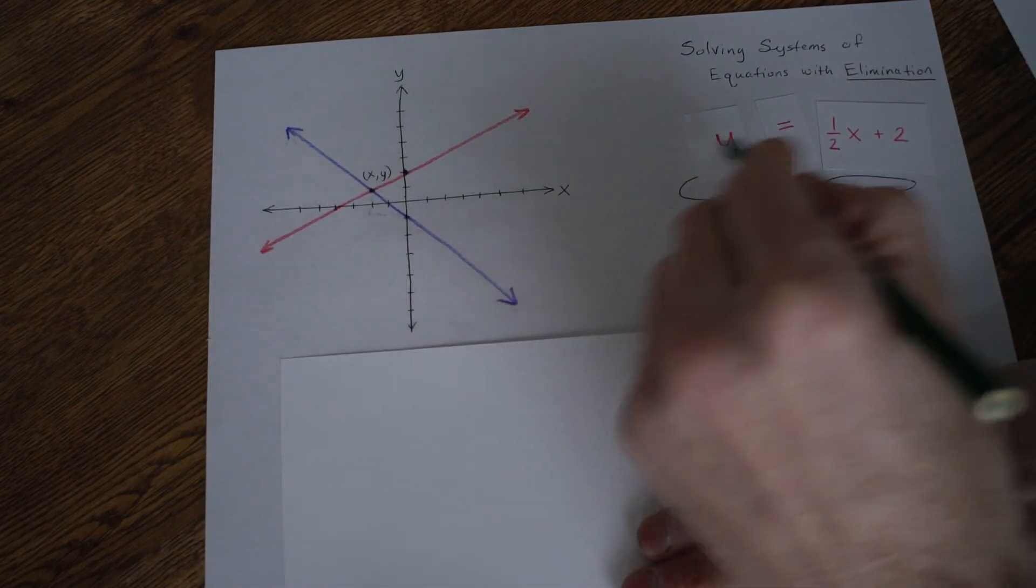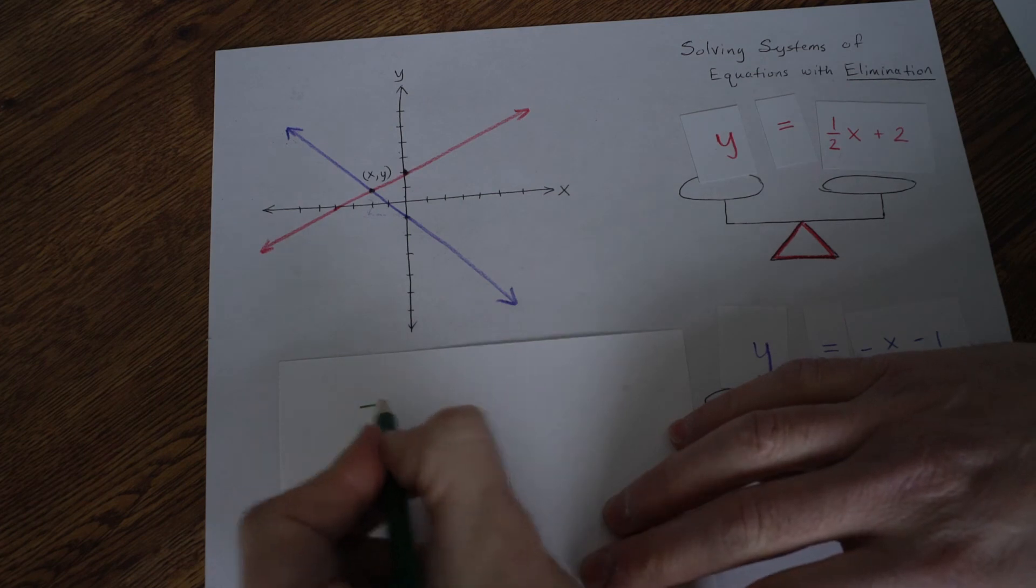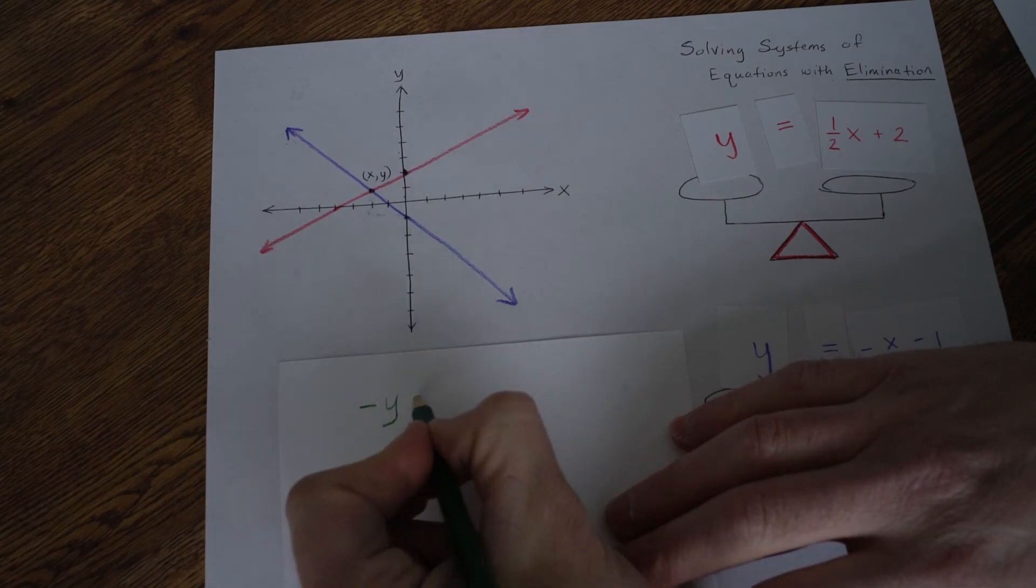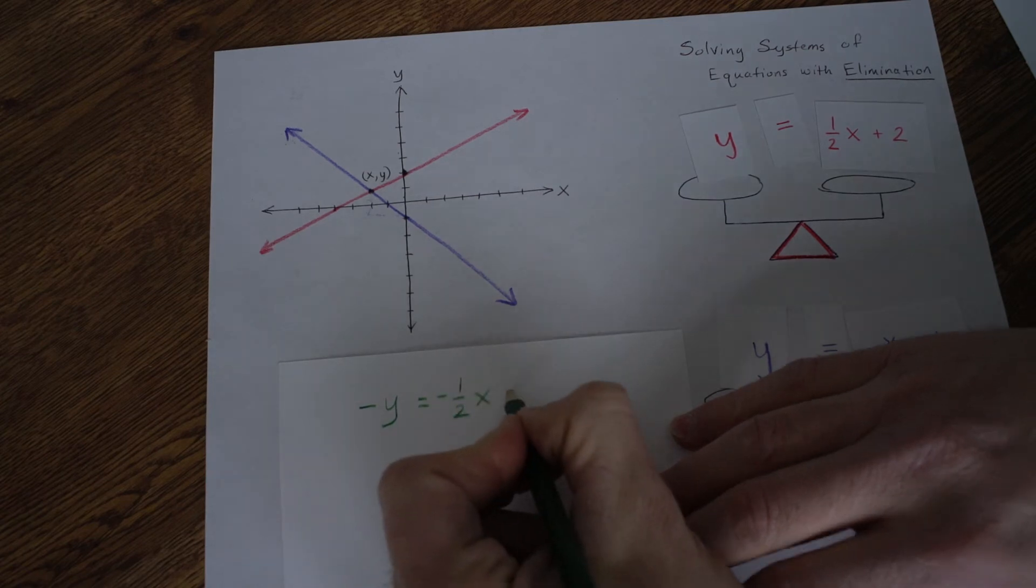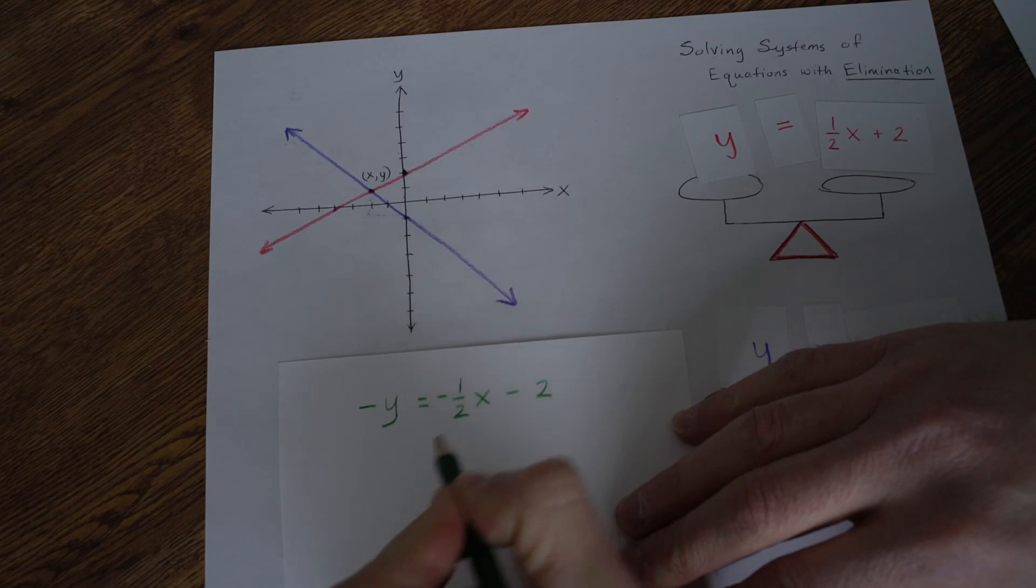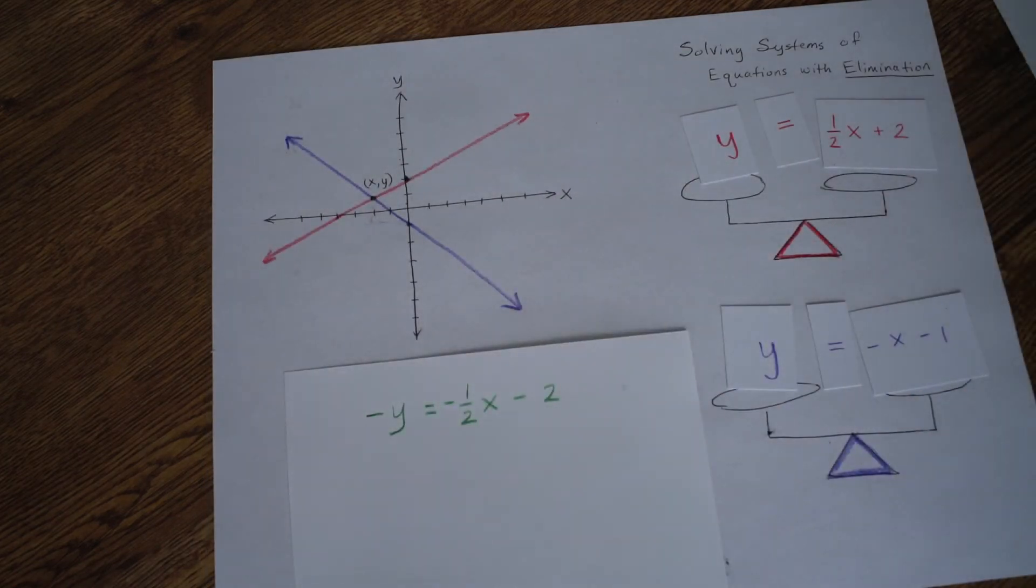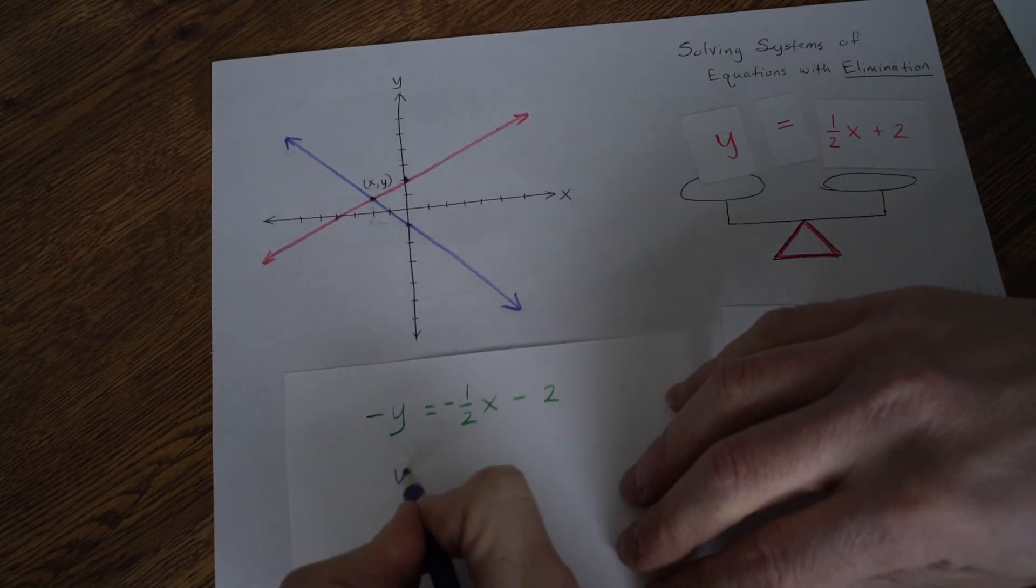So this is an equivalent line. Let me use a different color for this. Let's use a dark green this time. So we have this times negative 1. Negative y equals negative 1 half x minus 2.